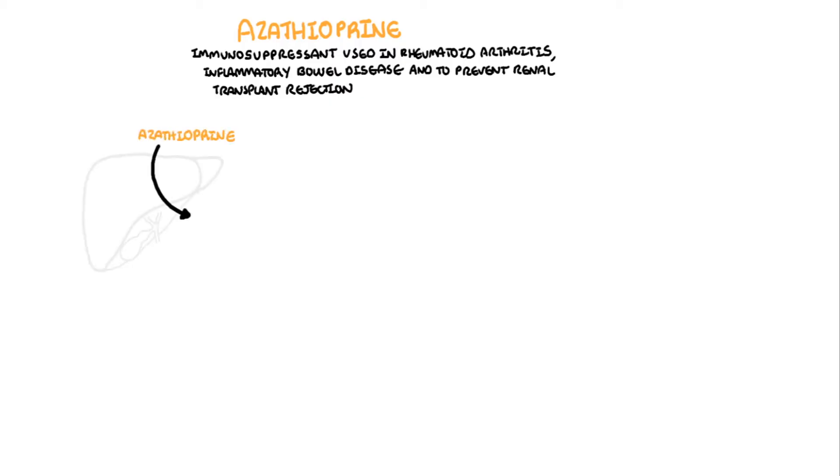Azathioprine is a prodrug of 6-mercaptopurine, which is then metabolized through different pathways. For example, metabolism into 6-thioguanine nucleotides is of benefit because this is where azathioprine exerts its immunosuppressive effects.